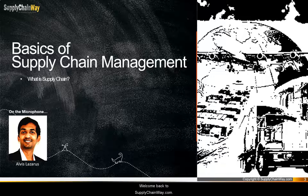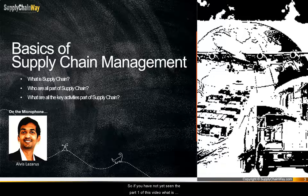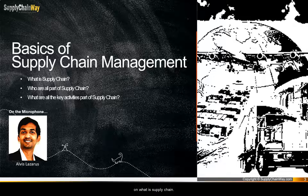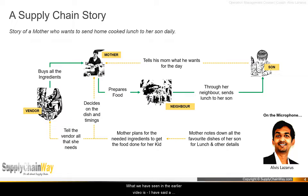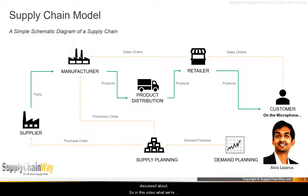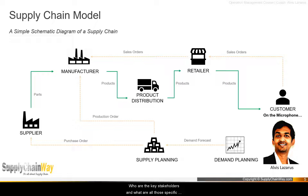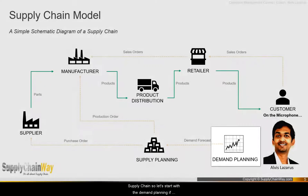Hello everyone, welcome back to supplychainway.com. This is Part 2 of the topic 'What is Supply Chain.' If you haven't seen Part 1, you can find the link in the description. In the earlier video, I told you a supply chain story and explained the supply chain model. In this video, we're going to spend more time understanding who the key stakeholders are and what specific activities they perform as part of supply chain. Let's start with demand planning.